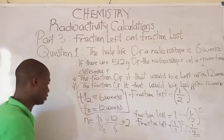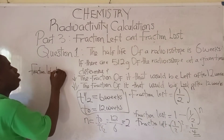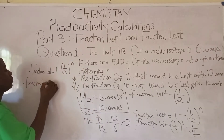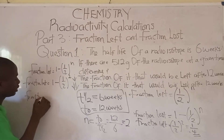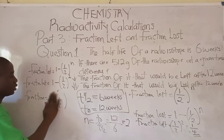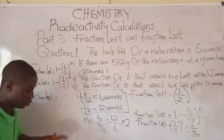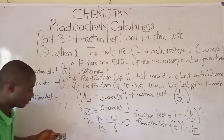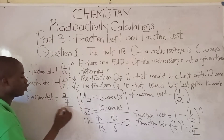Let's calculate for fraction lost. Fraction lost is 1 minus 1 over 2 raised to the power of n. Since n equals 2, fraction lost equals 1 minus 1 over 2 raised to the power of 2, which gives 3 over 4. This is the fraction lost.